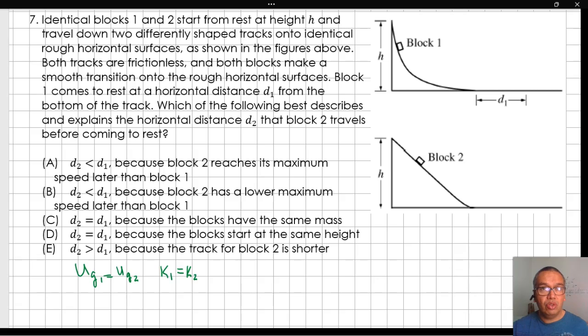The work that friction is doing to stop each of the blocks must be the same. Such work is equal to μₖmgd₁ for block 1 and μₖmgd₂ for block 2.